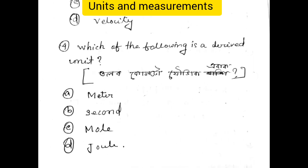Which of the following is a derived unit? Meter and second are fundamental units, while mole — even though it is a fundamental unit — some quantities are derived. Velocity is a derived quantity, not a fundamental one.